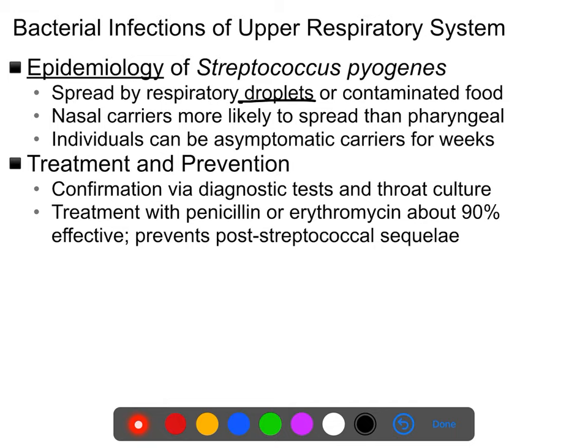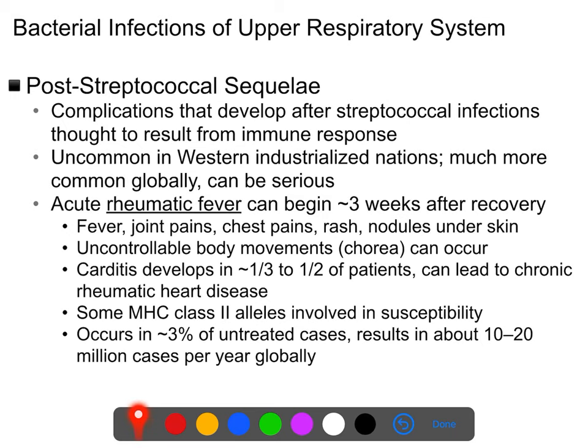The downstream consequences of strep throat are called post-streptococcal sequelae. Sequelae is a term for when a disease can have consequences that might not appear for months or years into the future. With strep throat, if you don't get it treated, even though your immune system may control it in your throat, you'll have a larger native population of Strep pyogenes that can go on to cause these problems later.